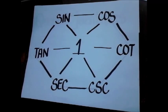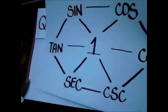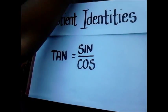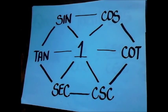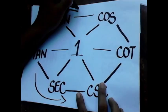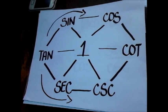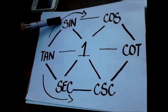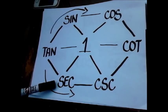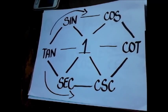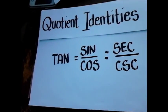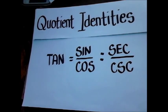Let's start with the quotient identities, beginning with tangent equals sine over cosine. There are two ways to find the quotient identities: counterclockwise and clockwise rotation. For example, using clockwise rotation, tangent equals sine over cosine. Using counterclockwise rotation, tangent equals secant over cosecant. Therefore, tangent equals sine over cosine and also equals secant over cosecant.